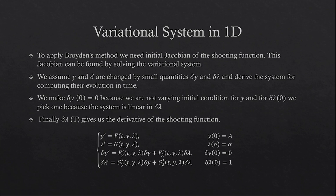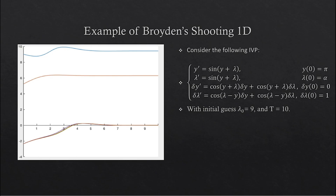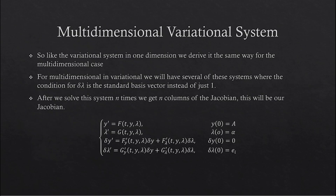Once we have our initial Jacobian value, we may then proceed by using Broyden's method. For this Broyden's shooting simulation, we will use the following nonlinear system of equations, shooting with the initial guess of 9 at time 10. From the graph, we can see our first initial guess trajectory, which is 9, and then the updating formula gives us the next guess, eventually getting closer and closer to our target of 0. For Broyden's method in multidimensional, we would have to use the variational system again to produce our initial Jacobian value. Solving the variational system will be the same as the one-dimensional case, except we will have to solve several of these systems. These systems will make our variational lambda be a basis vector. After solving the system n times, we will get n columns for the Jacobian, and this will be our initial Jacobian value.